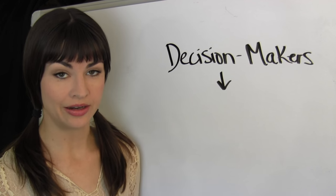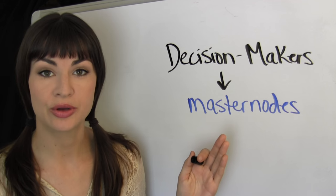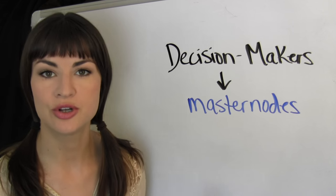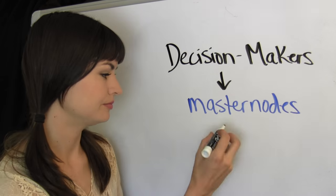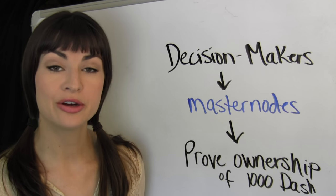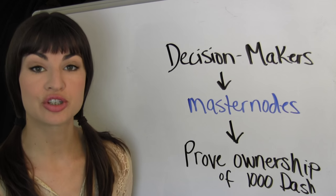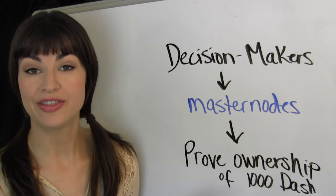Dash's decision-makers, then, are called masternodes, and the reason they are bestowed with the authority to make network-wide decisions is primarily because they each must prove an ownership of a thousand Dash.